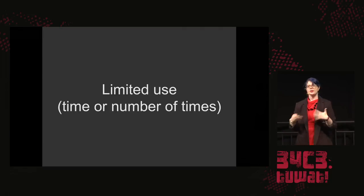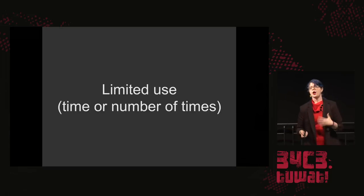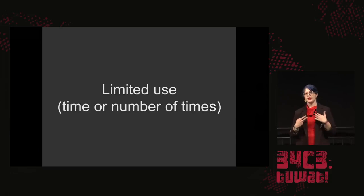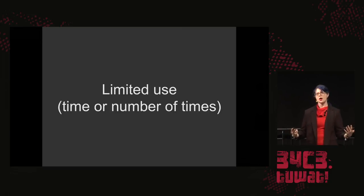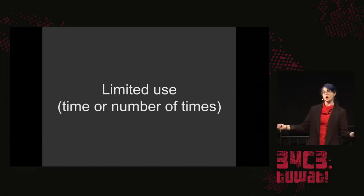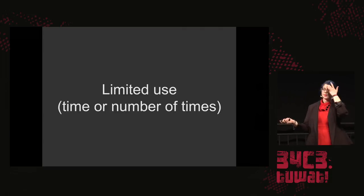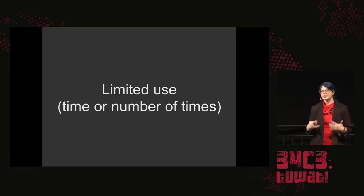Some of the ways we see DRM in action is limited use — either times or number of times. Time might be: I live in a place where the library system lets me borrow e-books, however they're only valid for so long because of the DRM on them. Or number of times — something that happens in video games especially is you're allowed to install them a limited number of times, three or four maybe, and then after that, you lose the right to keep using it.